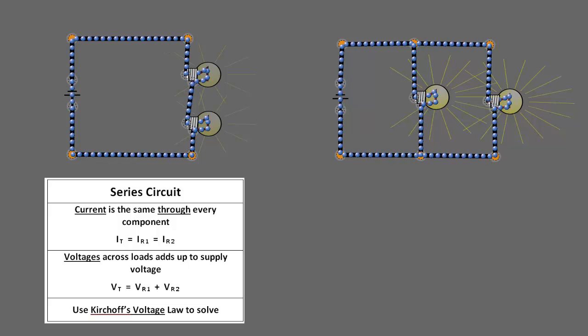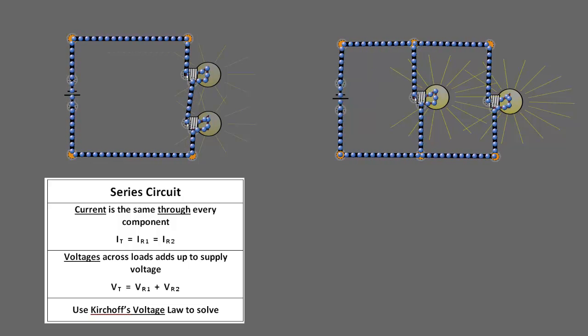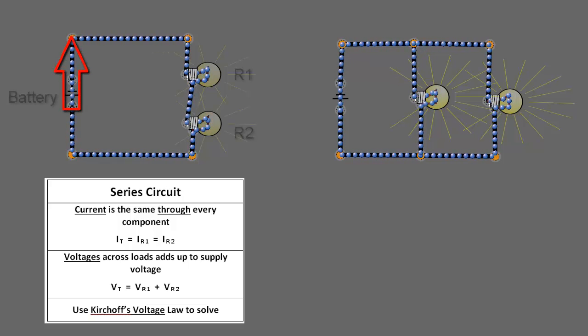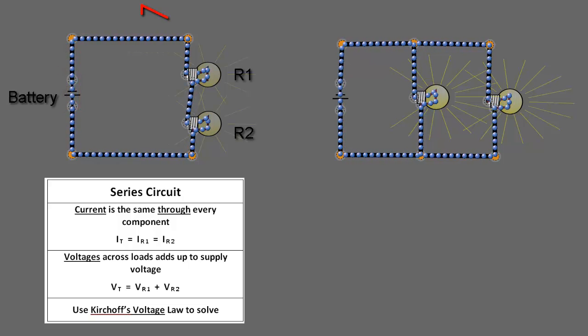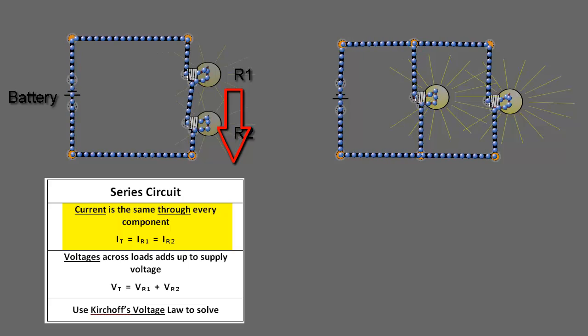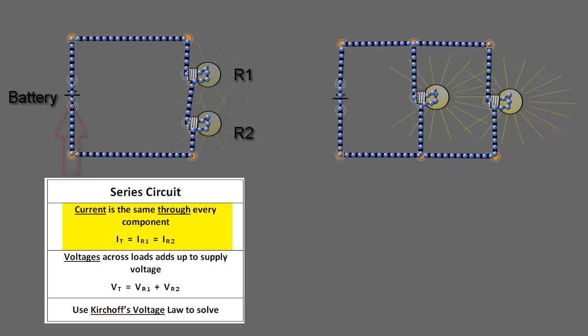If we look at a series circuit, the current coming out of the battery is going to be the same as the current going into R1, which is going to be the same as the current going into R2, and the same as the currents leaving those components, and the same as the current entering the battery. It's all going to be the same.